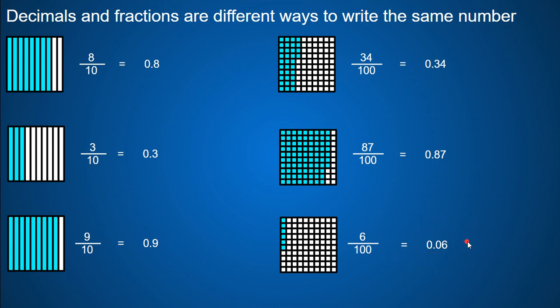So fractions and decimals are related to each other — they can be equivalent. They are said and read the same way when we have tenths and hundredths.